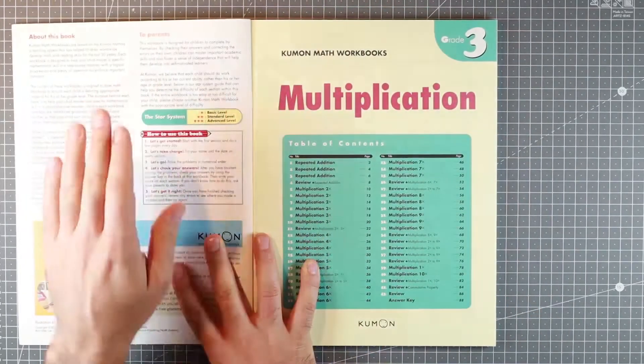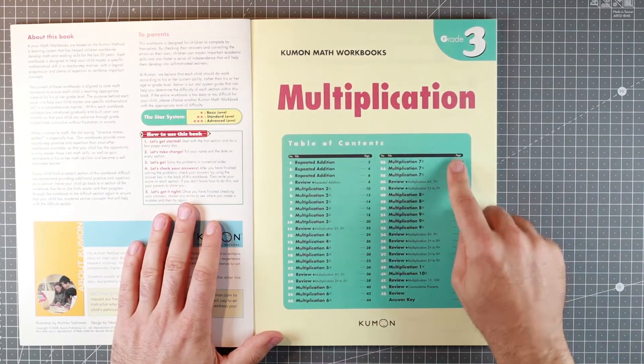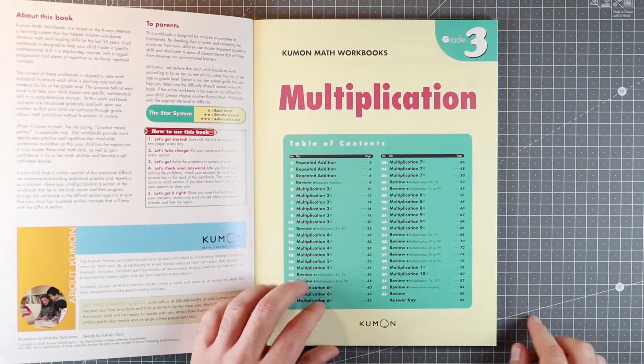What do they cover? Well, they give you the instructions first of all, and then they go two times, three times, four, up until ten times, and they mix them up as well.